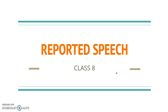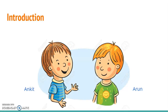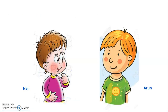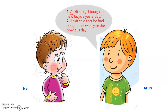First of all children, look at this picture. You can see here two children talking to each other named Ankit and Arun. Ankit is saying something to Arun. Ankit says, 'I bought a new bicycle yesterday.' Now, next day when Arun meets Neil, he can report what was said by Ankit in two ways. Either he can say, 'Ankit said, I bought a new bicycle yesterday,' or 'Ankit said that he had bought a new bicycle the previous day.' This is called direct speech.